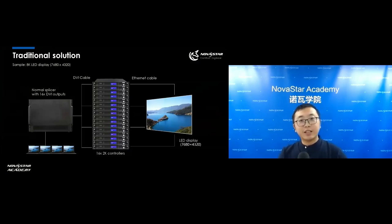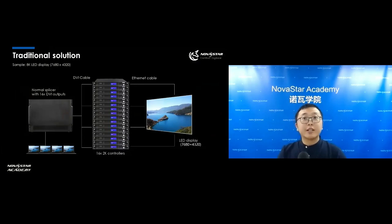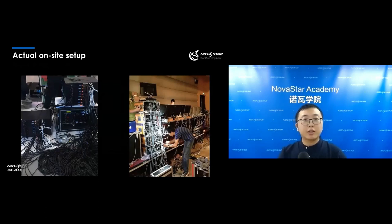For the normal solution of an 8K LED screen, it should use 16 pieces of M-Control 660, one video splicer, and four pieces of 4K-level output graphic cards. This will cause very complicated wiring. This is the actual on-site setup — as you can see, there is too much wiring, and for the technicians, it could be a very hard experience to make the configurations.